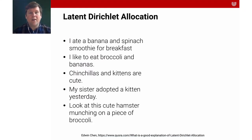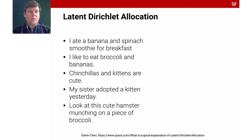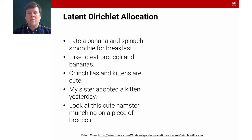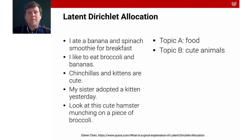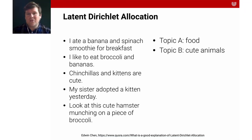For this I have a very nice example from Adnan Chen — five different sentences. For instance: 'I ate a banana and spinach smoothie for breakfast,' or 'Chinchillas and kittens are cute.' You probably will agree that there are two main topics in this example. Topic A could be described as food, with banana and spinach, and topic B could be cute animals or just animals in general.